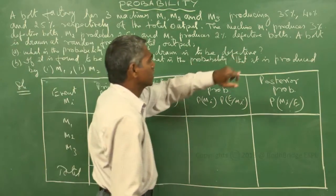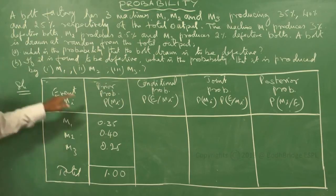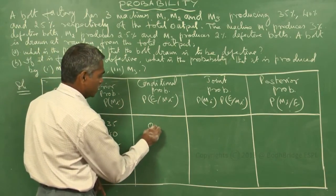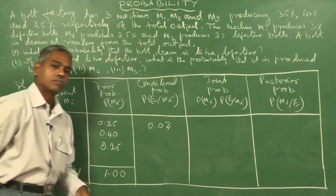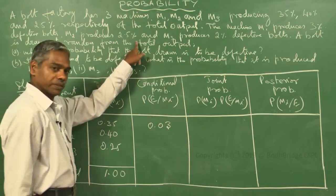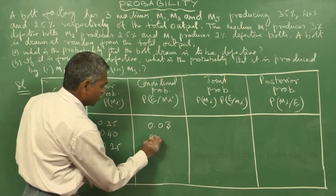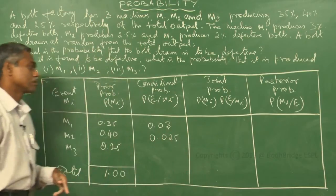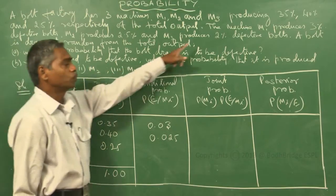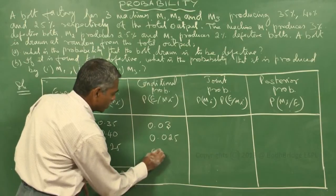Machine M1 produces 3% defective bolts, so P(E | M1) = 3/100 = 0.03. M2 produces 2.5%, so P(E | M2) = 2.5/100 = 0.025. M3 produces 2% defective bolts, so P(E | M3) = 2/100 = 0.02.